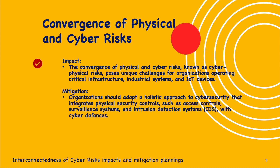Organizations should adopt a holistic approach to cybersecurity that integrates physical security controls — such as access controls, surveillance systems, and intrusion detection systems (IDS) — with cyber defenses. Implementing network segmentation, anomaly detection, and resilience measures can help mitigate cyber-physical risks and protect critical infrastructure from cyber attacks.